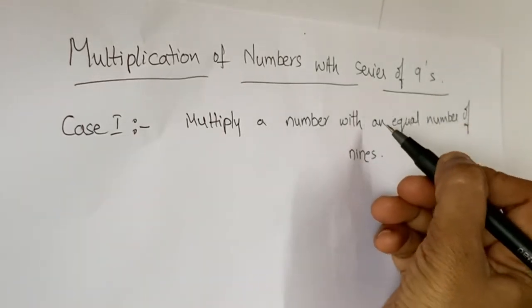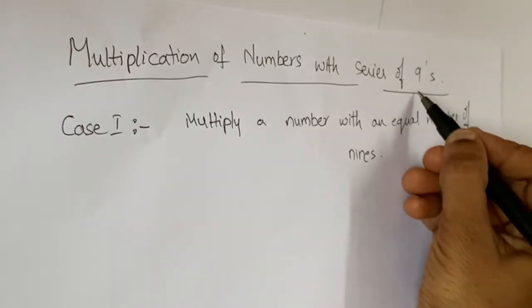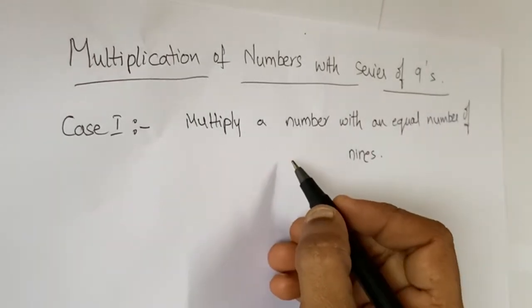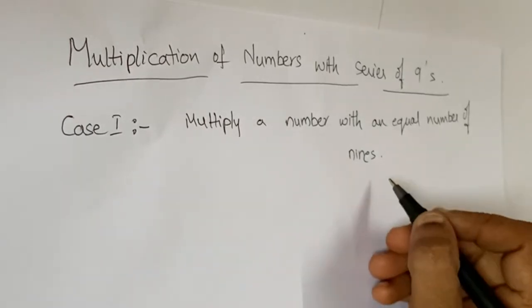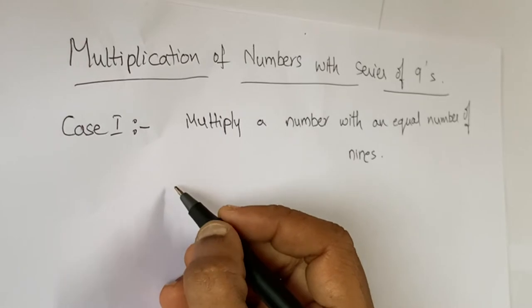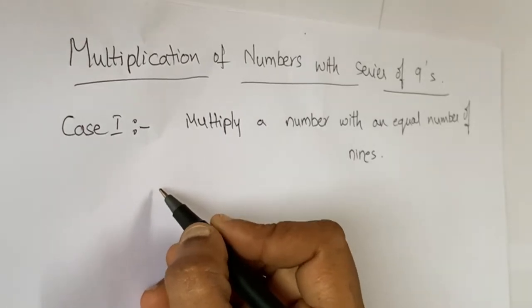Today we learn about the multiplication of any number with a series of nines. First case: if the multiplicand and the multiplier both are equal in digits. For example...